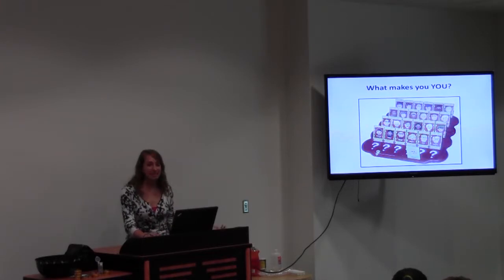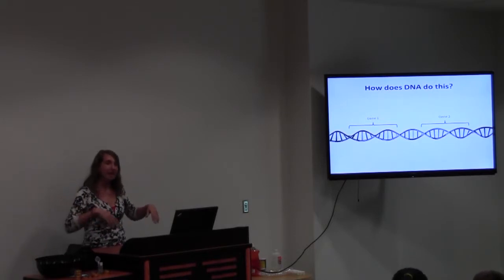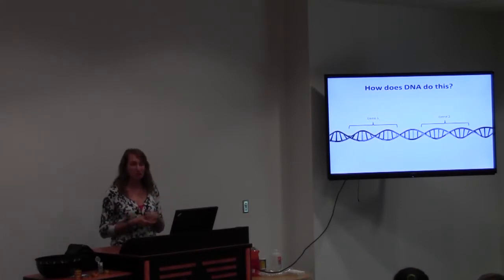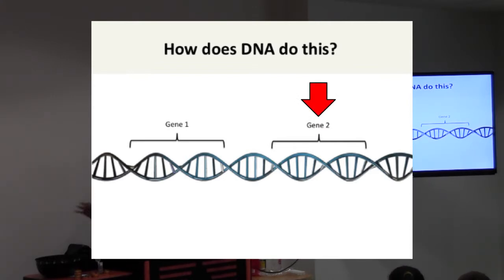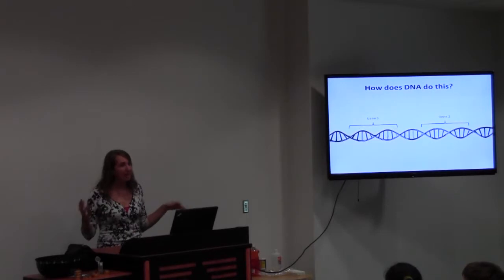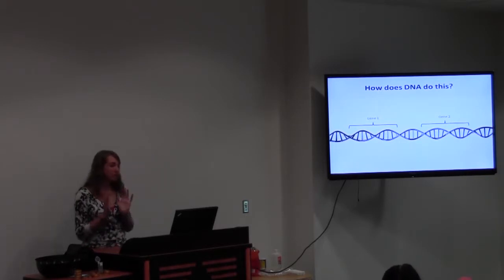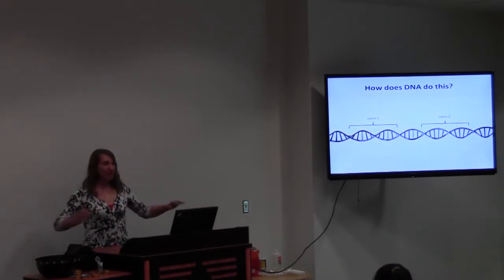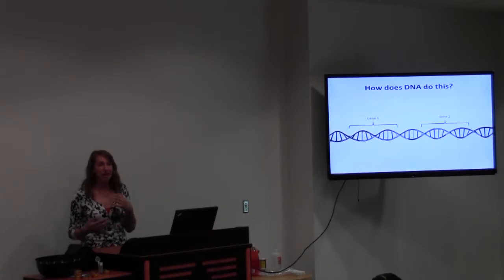How does DNA do this? This is a picture of a whole strand of DNA. There are certain segments of this DNA strand called genes. In this picture there are two different genes — gene one and gene two — with a little space in between. There are lots and lots of different genes in our entire DNA, and genes play a very important role in how our cells are functioning.